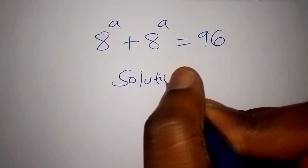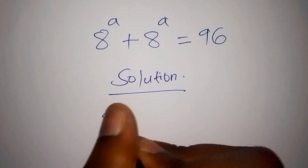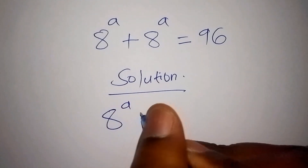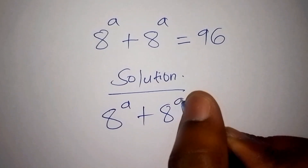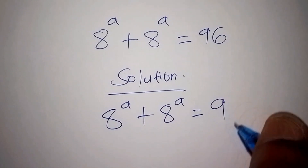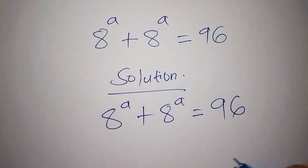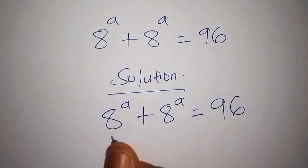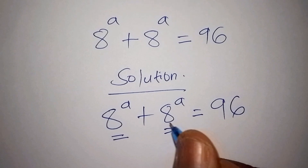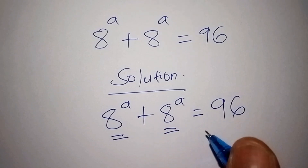On the solution part, we have 8 to the power of A plus 8 to the power of A equals 96. We are asked to find the value for A. The first thing we need to do is to factorize 8 to the power of A plus 8 to the power of A, because they are similar terms.